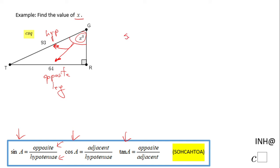So I'm going to write here: sine of angle g, which in this case is x, equals the opposite, which is 64, over the hypotenuse, 93.